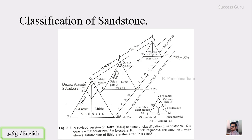Here is the classification of sandstone proposed by Dott in 1964. His basis of classification is based on the composition of the grain and the matrix percentage. The sand grain size range lies between 2 millimeter to 1/16 millimeter. According to the composition and the percentage of matrix it has been classified, and there is also a further subdivision for the lithic arenite portion.